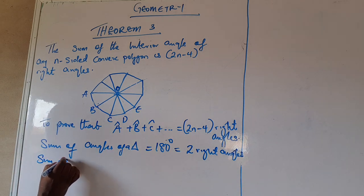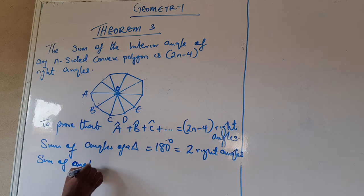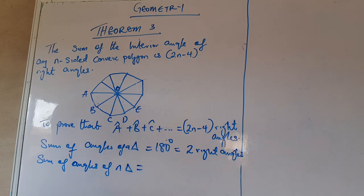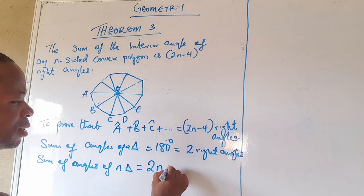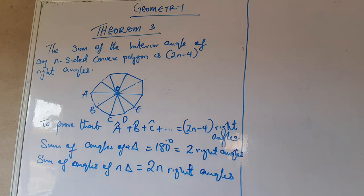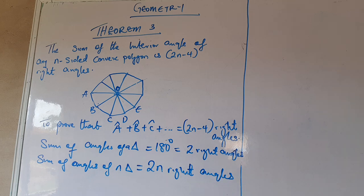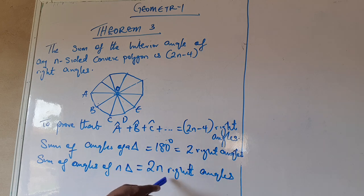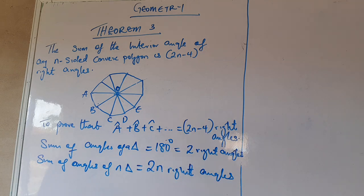Now, the sum of angles of n triangles will equal 2n right angles. That is, if one triangle gives us 180 degrees which is 2 right angles, then n triangles give us 2n right angles. For example, if n is 2, then we have 2 triangles, giving 180 times 2 = 360 degrees, which equals 4 right angles. Substituting n = 2 gives 2 times 2 = 4, and 4 times 90 = 360. So it stays valid.